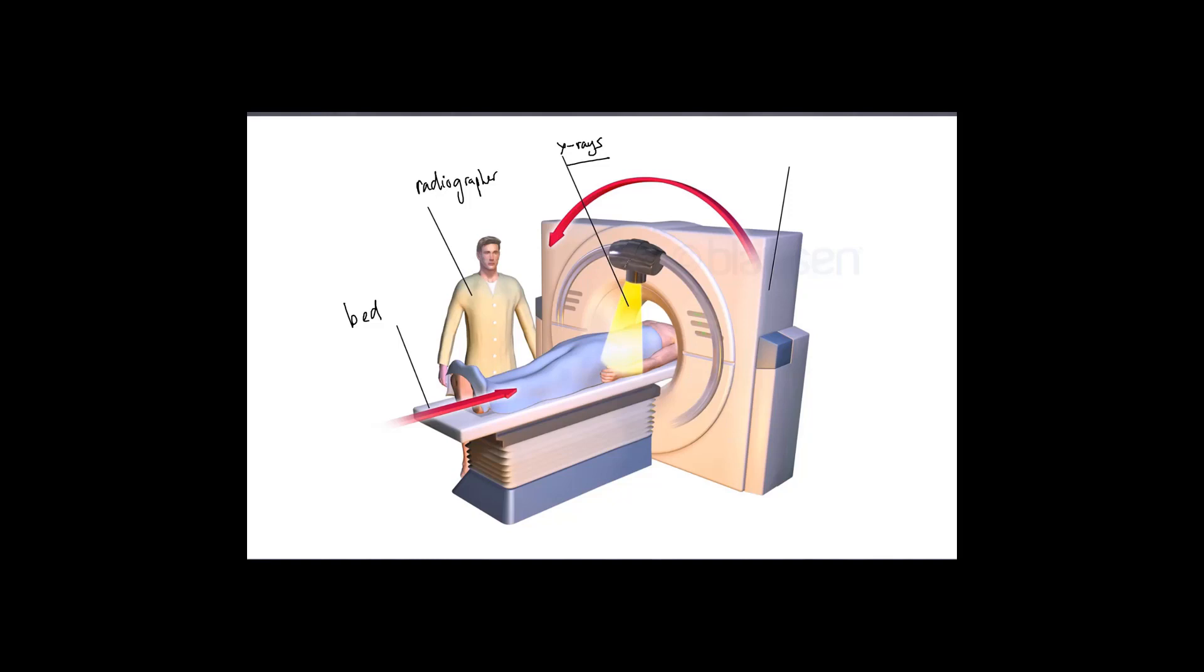But what we have is an x-ray source up here that spins around your body and on the other side of the x-ray source we have a series of detectors which picks up the x-rays as they pass through your body. And finally we have the whole device which is called the Gantry. Now we're particularly interested in the Gantry and how the x-rays pass through your body. So we're going to examine that next.